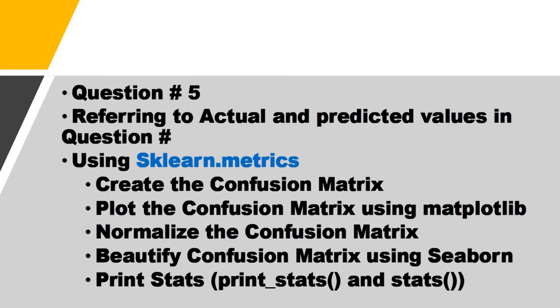Use the same dataset with actual and predicted values to create the confusion matrix, plot the confusion matrix, and normalize it. Till the third task, you can use seaborn to beautify the confusion matrix, but the print_stats and stats methods are related to pandas_ml, so don't touch this.